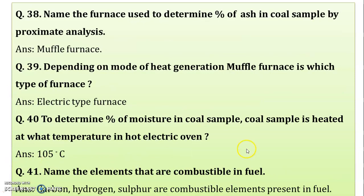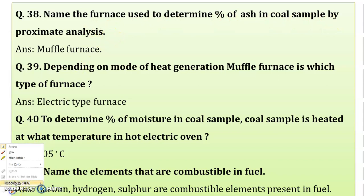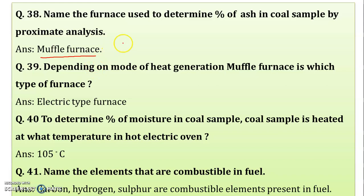Name the furnace used to determine the percentage of ash. In proximate analysis, the percentage of ash is determined by using a muffle furnace. A muffle furnace is used to determine the percentage of ash.